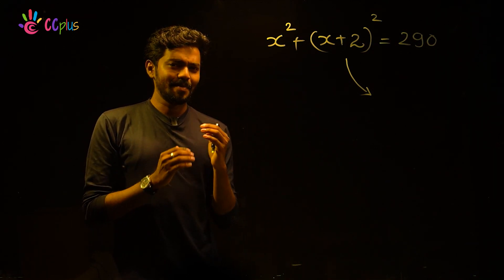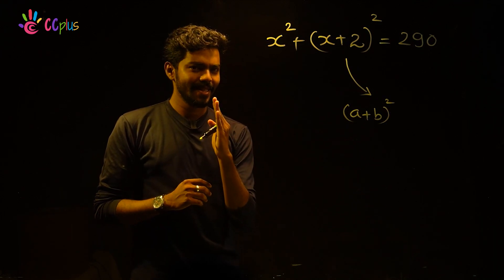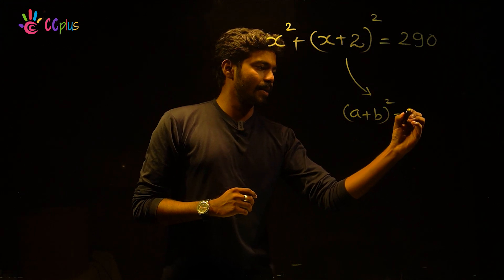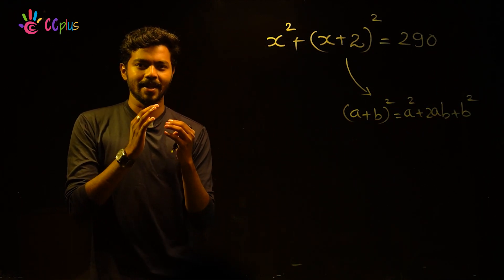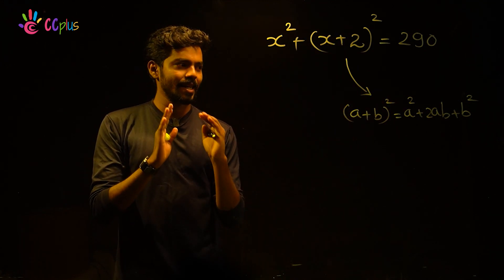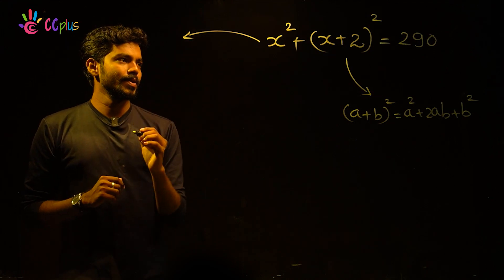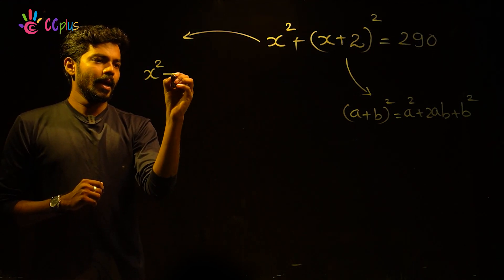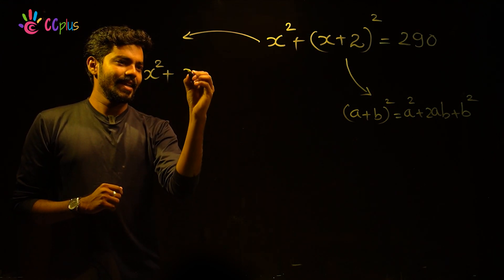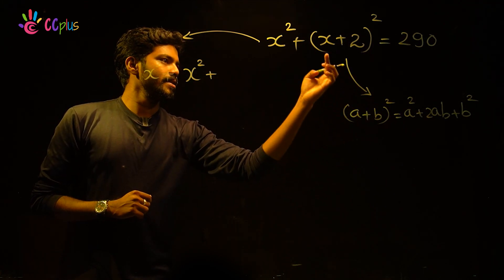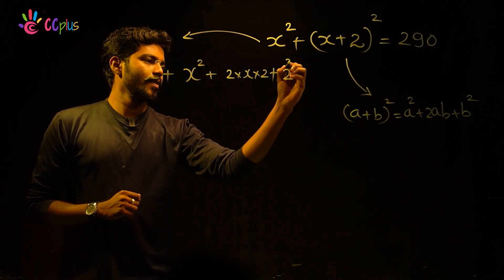We studied the identity: a plus b the whole square equals a squared plus 2ab plus b squared. Now we can expand (x plus 2) the whole square using this, where a is x and b is 2.